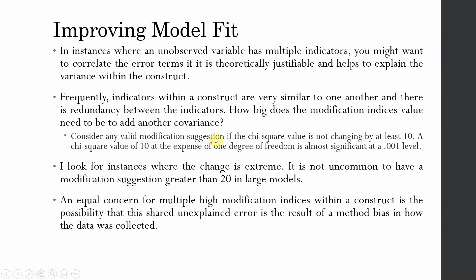How big does the modification indices value need to be to add another covariance? Consider any valid modification indices suggestion if the chi-square value is not changing by at least 10. When you draw covariance between error terms, it helps you change your chi-square value, reduce your chi-square value. A chi-square value of 10 at the expense of one degree of freedom is almost significant at 0.001.